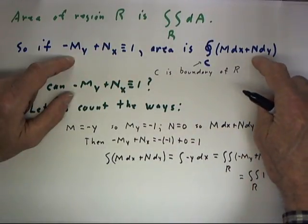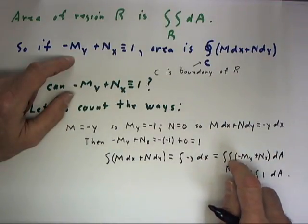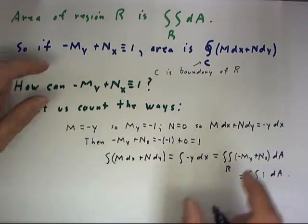Since N is 0, this part of the integral goes away. Since M is -Y, we have the integral of -Ydx.